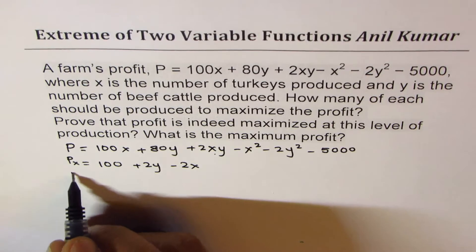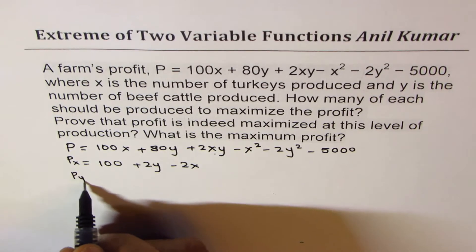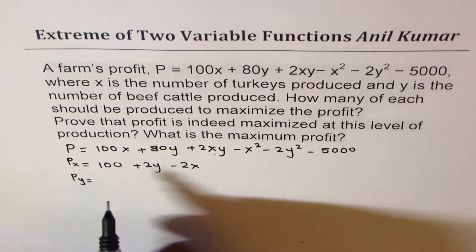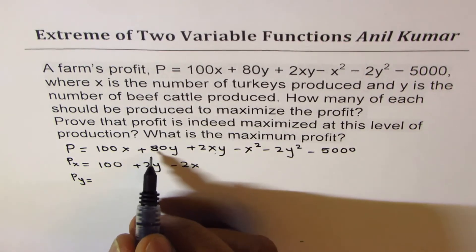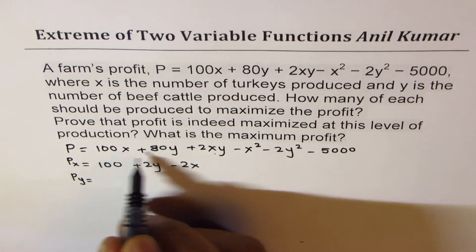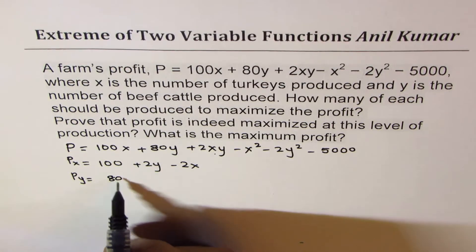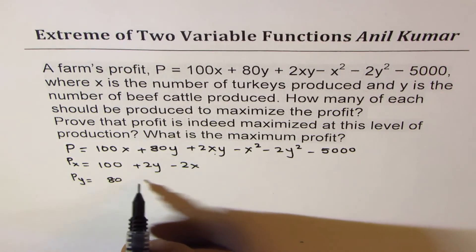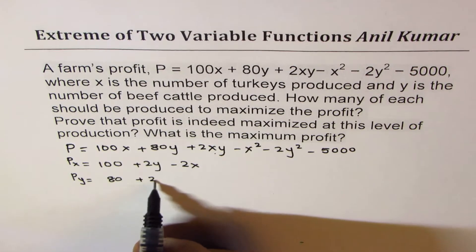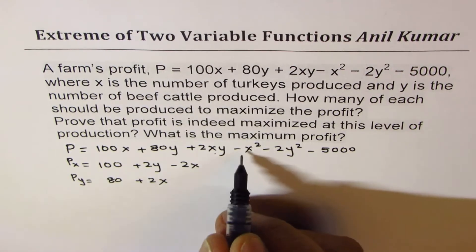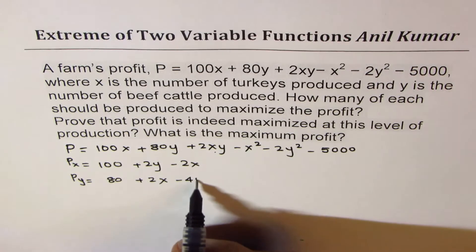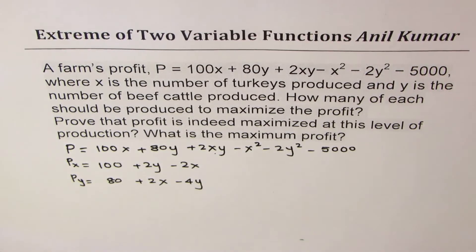Now the partial derivative of this equation with respect to y: this term gives 0, with respect to y that gives me 80, that gives me plus 2x, this is 0, and that is minus 4y. The derivative of a constant is 0.